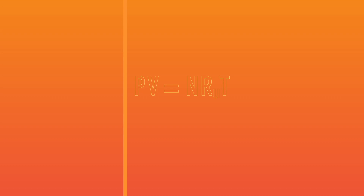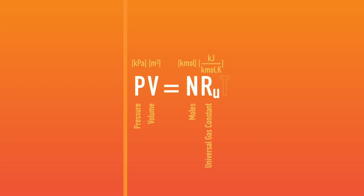Here, gas pressure in kilopascals is multiplied with volume occupied by the gas in cubic meters. This quantity is equal to the number of moles of gas times the universal gas constant times the temperature in Kelvin. The universal gas constant has a value of about 8.3 kJ per kilomole Kelvin.